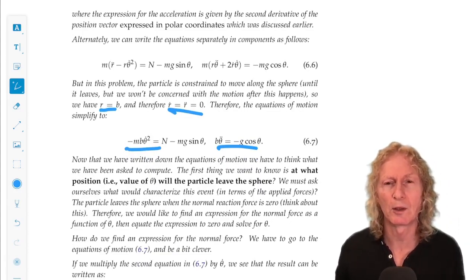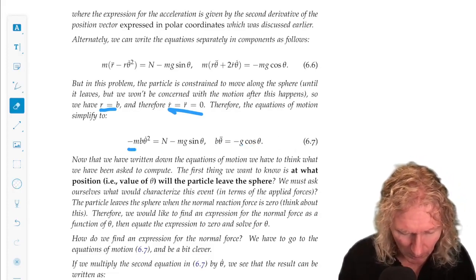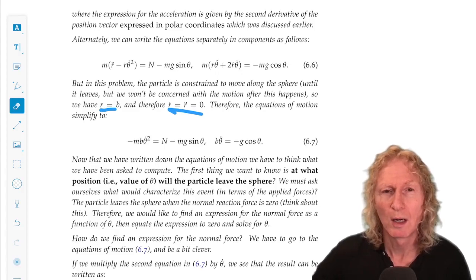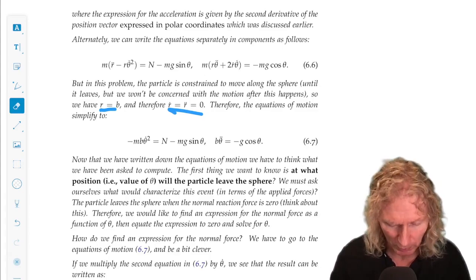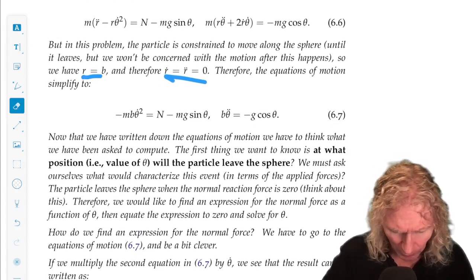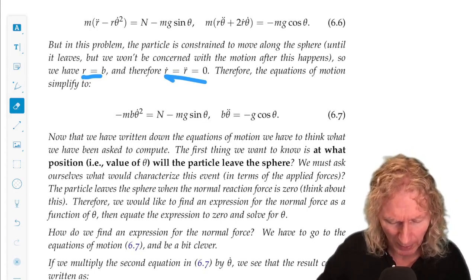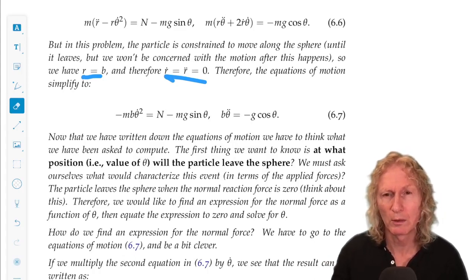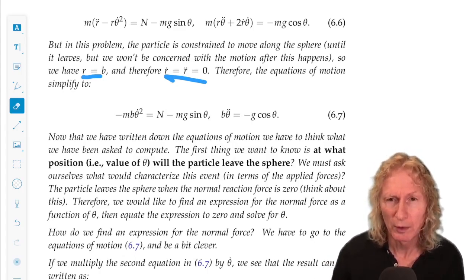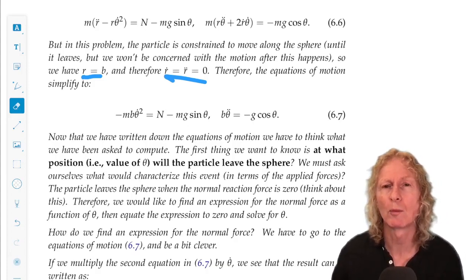Alright, now we've done all this work to get the equations of motion. We've expressed them in the proper coordinate system. Now we've got to go back and ask, how do we use these equations of motion to answer the questions we were asked? So the first thing we want to know is what position, at its value of theta, will the particle leave the sphere? So the particle slides down, it's pressing on the sphere, the sphere is pressing back.